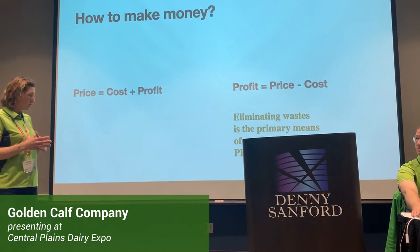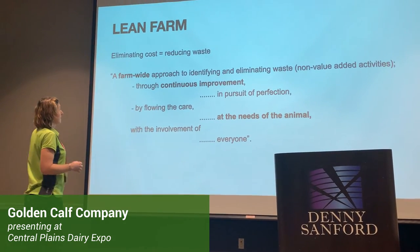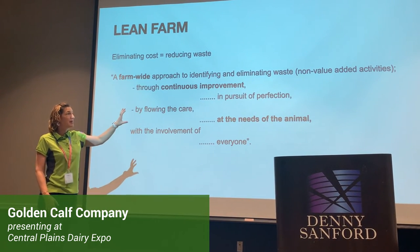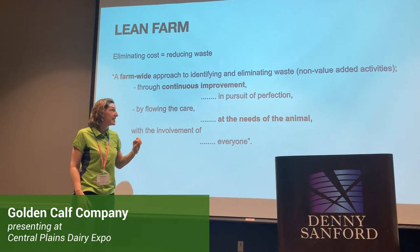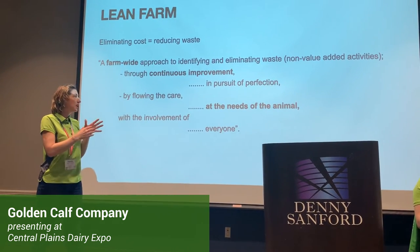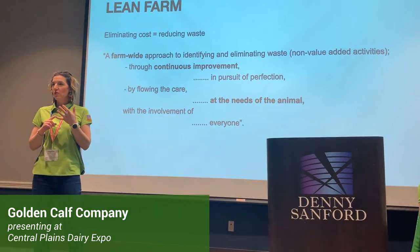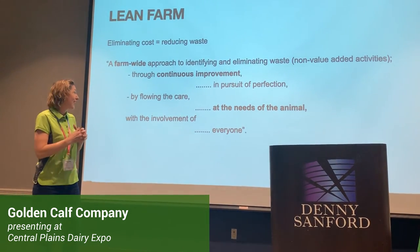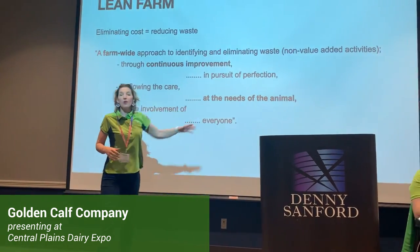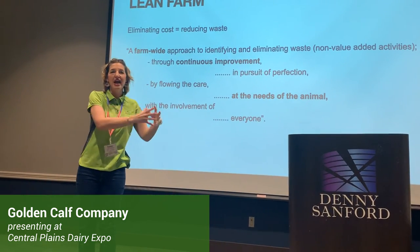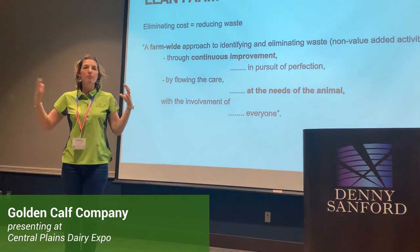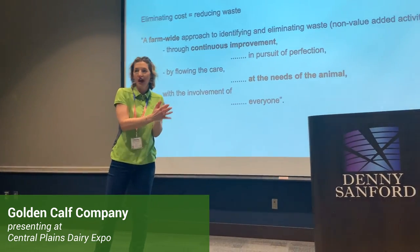The way we look at lean on a farm is a farm-wide approach to identifying and eliminating waste — also called non-value-added activities — through continuous improvement, meaning we're constantly trying to get better in the pursuit of perfection. If we don't have any waste, there's nothing else to eliminate and we have achieved perfection. By flowing care to the needs of the animal, we don't do anything unless the animal actually demands it, eliminating activities not directly related to the care we provide.